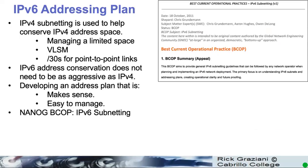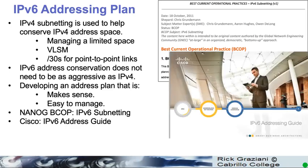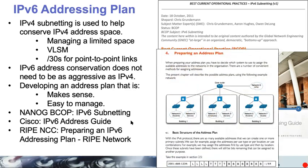And there are a lot of different articles and best practices on this. This is NANOG — Best Current Operational Practice on IPv6 Subnetting. You can Google that; it's from a while back. Cisco has an IPv6 addressing guide. Oh, I just noticed who wrote this — Chris Grunderman. Good guy. Anyway, never noticed that before. That's funny.